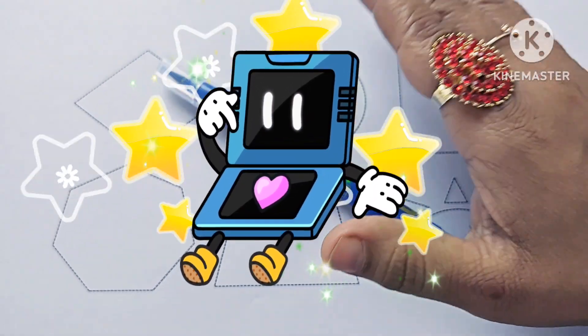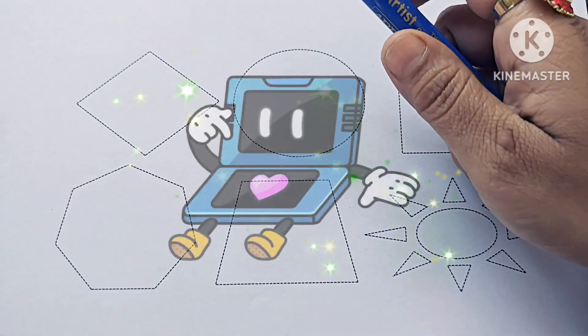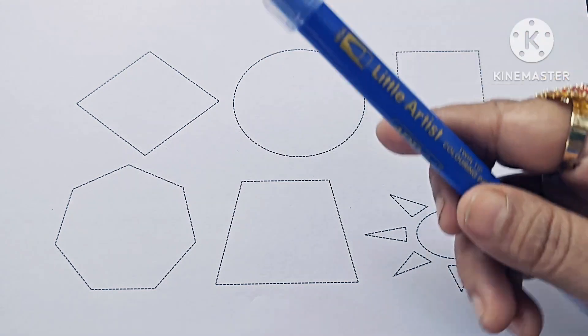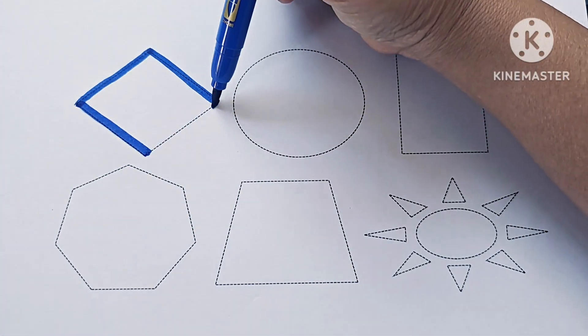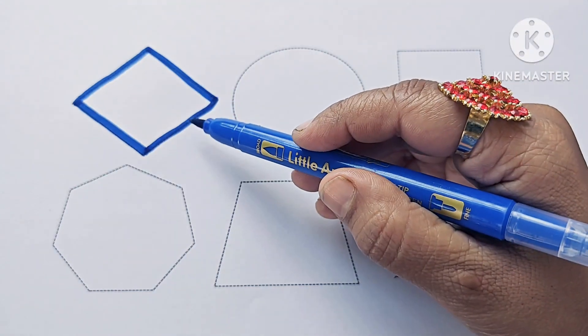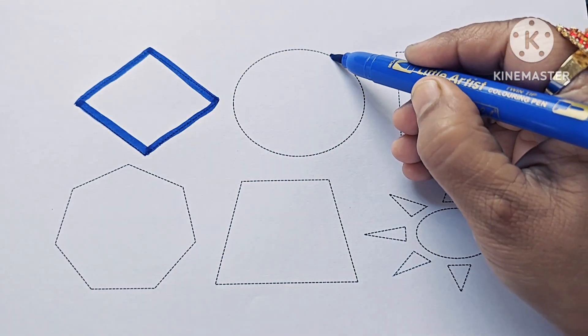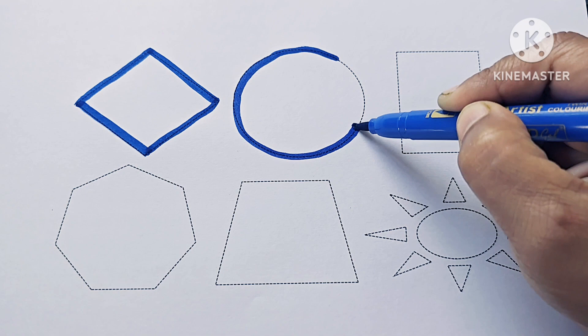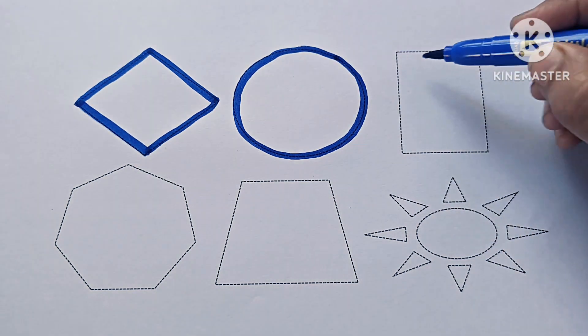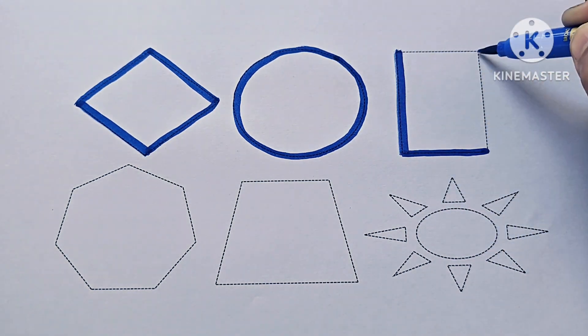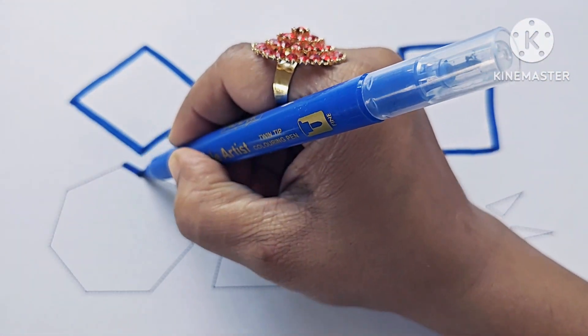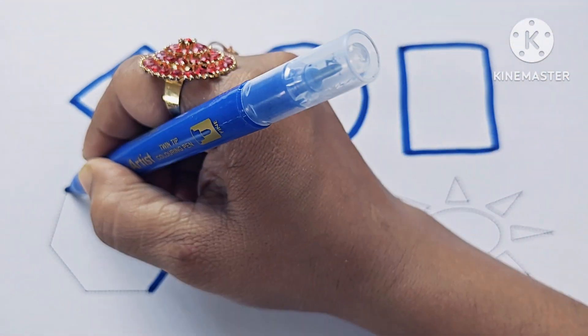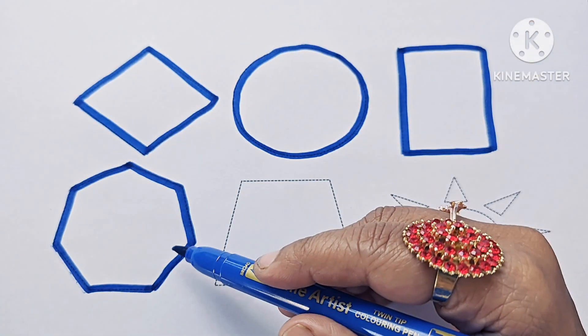Hello kids, let us learn to draw new shapes and symbols. This is blue color, rhombus or diamond, this is circle, this is rectangle, this is heptagon.